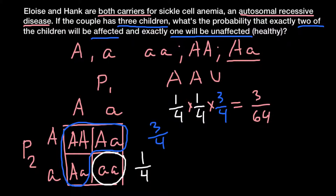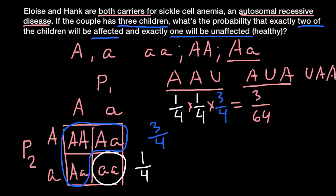This is the probability for one specific combination. But our question doesn't specify the order. So this is not the only possibility. Another would be: affected, unaffected, affected. And the next variant would be: unaffected, affected, affected. So there are three variants in total for having exactly two affected children and one unaffected. That means we multiply our result by three, giving a final answer of nine out of 64.